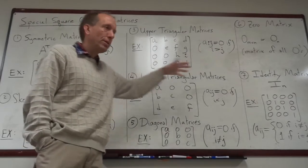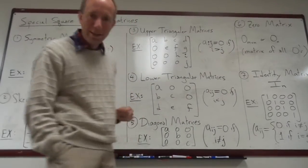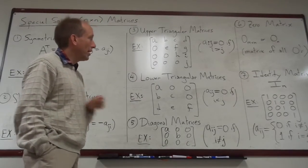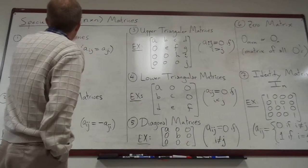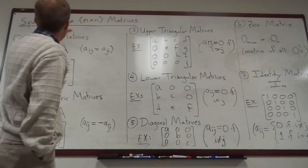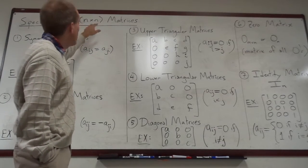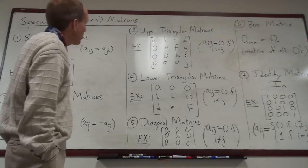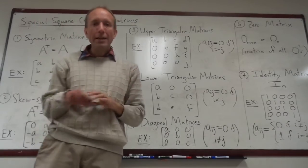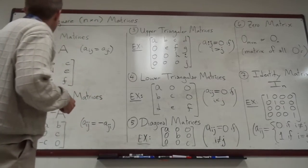These are types of matrices that come up a lot. Seven different categories here that are worth kind of being really familiar with. Okay. In almost all of these cases, we are only going to be talking about these concepts for square matrices. So I said n by n right here. Okay. So most of these concepts don't make sense if you don't have a square matrix.